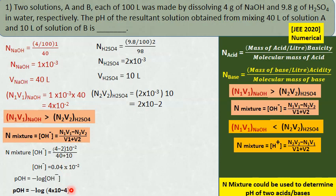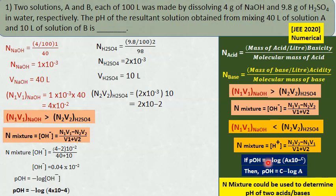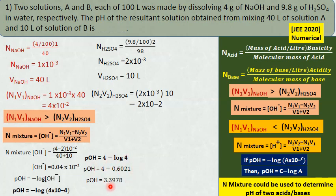pOH equals negative log of hydroxyl ion concentration = −log(4×10⁻⁴). Written as A×10⁻C, this equals C minus log A. So pOH = 4 minus log 4. Since log 4 equals 0.6021, on simplification you get 3.39, which can be taken as 3.4.